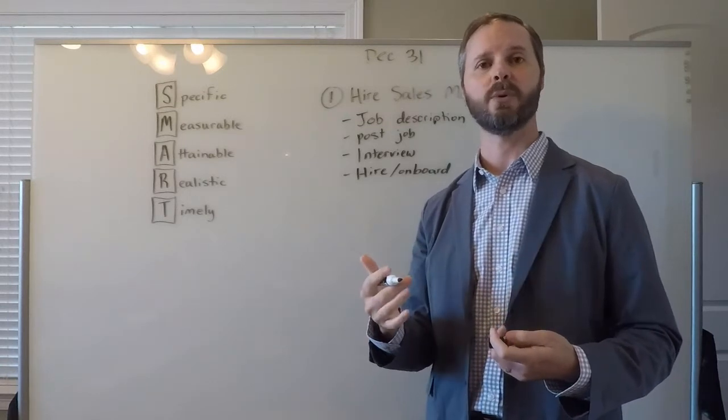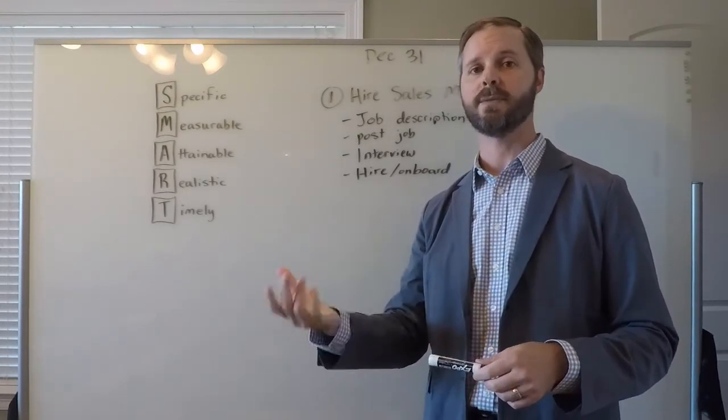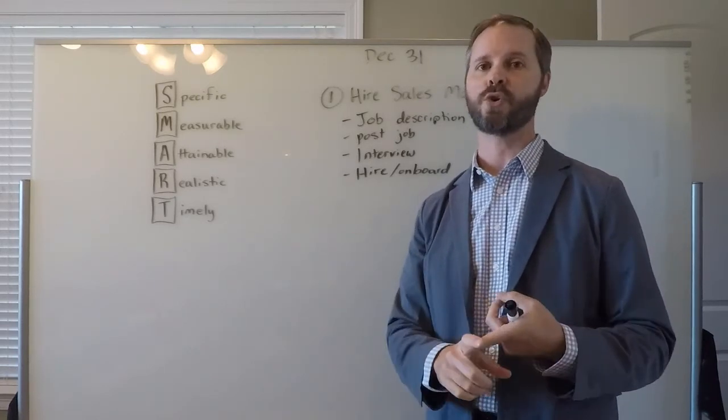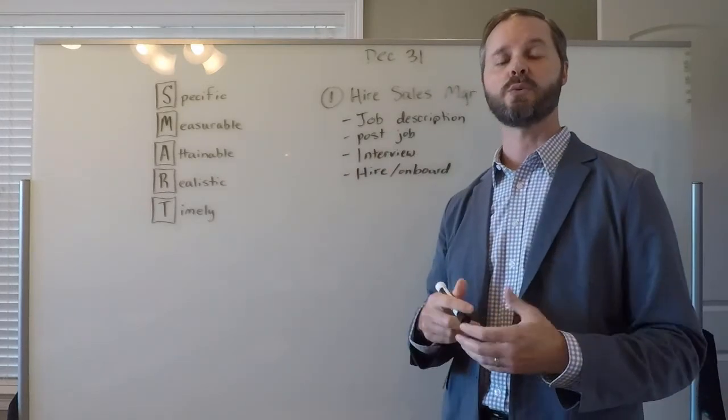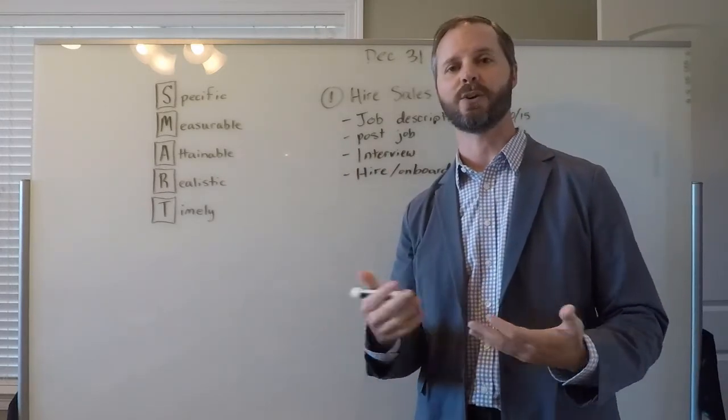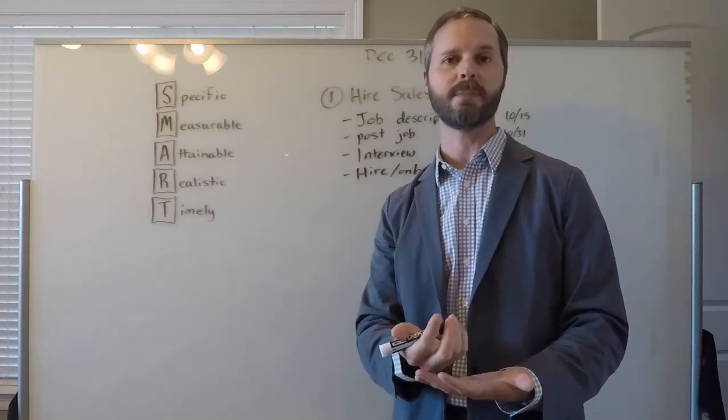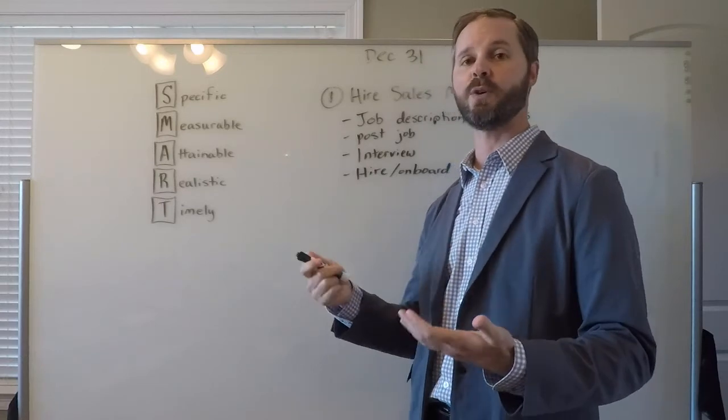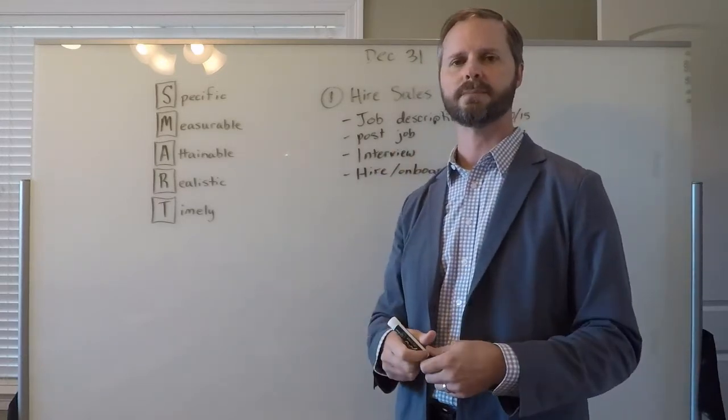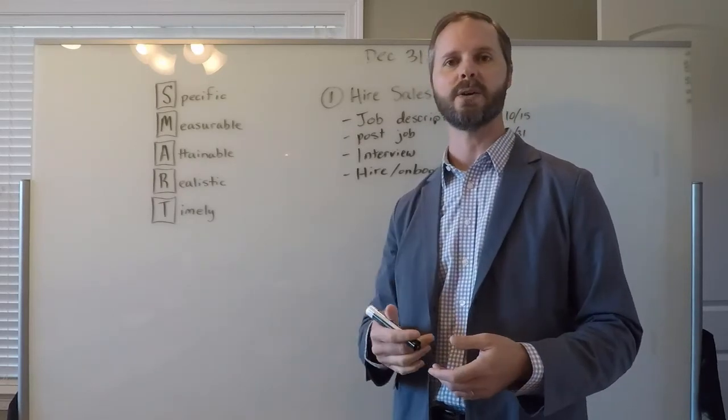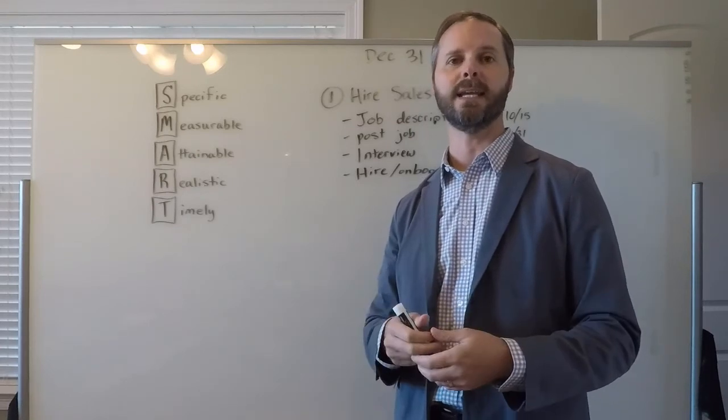Every week during our EOS level 10 meeting, when we're talking about our rocks and we're saying on track or off track, it's really easy to say, hey, I'm on track here. Because what we don't want to happen, we don't want to get 75 days into our quarter and realize, oh, we don't even have a job description yet. This helps us keep it on track and every week we can look at this and say, yep, I'm on track. Or, hey, I'm off track. And remember, if we're ever off track, let's drop those down. Drop any issues like that down to the issues list so we can IDS it as a team.